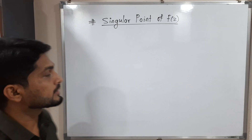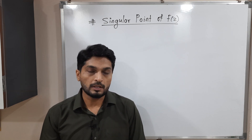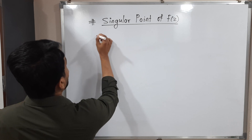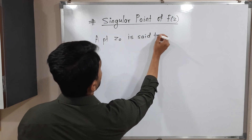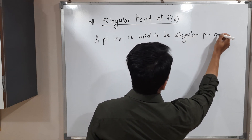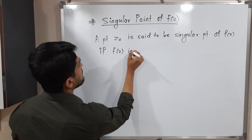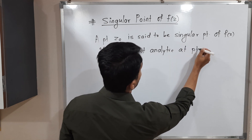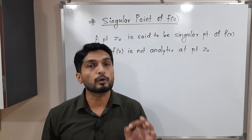Hi everyone. In this video we are going to discuss singular points of f of z, or you can say singularity of a complex valued function f of z. A point z0 is said to be a singular point or singularity of f of z if f of z is not analytic at point z0. So if the given function f is not analytic at z0, then z0 is said to be a singularity or singular point of f of z.